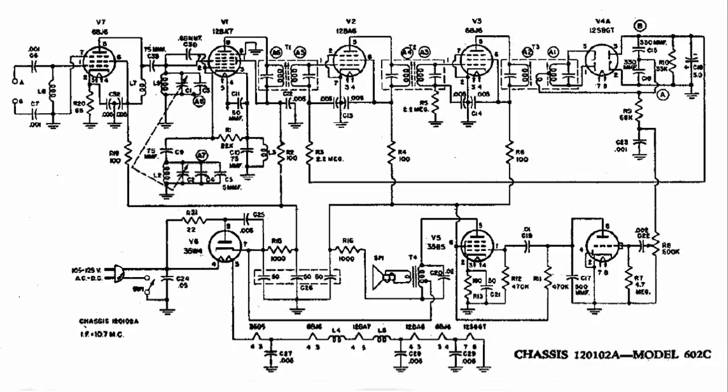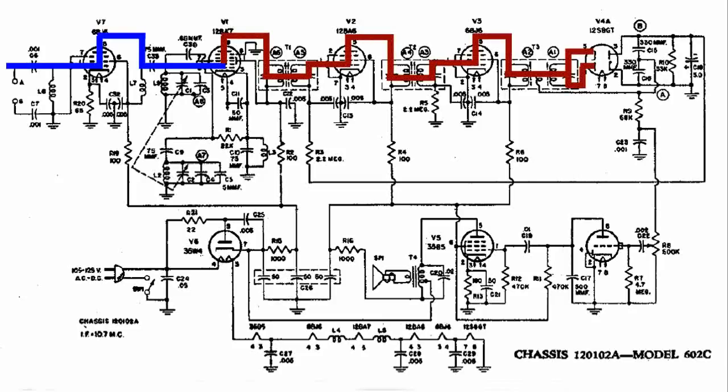Let's go through the signal path of this circuit from the antenna. It does go through the 6BJ6 and then over to the 12BA7, and this mixes the frequency, and it comes out the intermediate frequency of 10.7 MHz, and this gets magnetically coupled through the IF of T1 over to the 12BA6, and the output of that gets magnetically coupled through T2 over to the 6BJ6, and then again through T3 over to the 12S8GT where it gets detected.